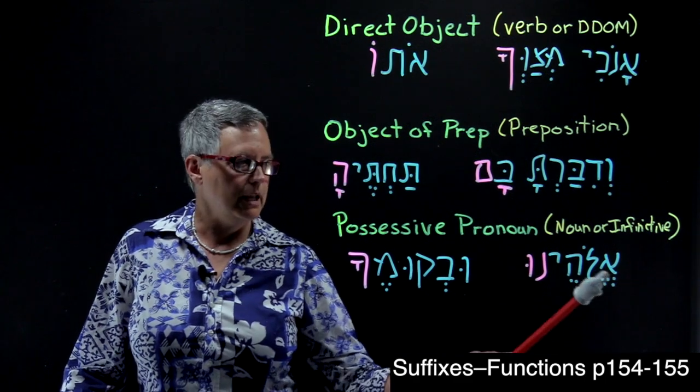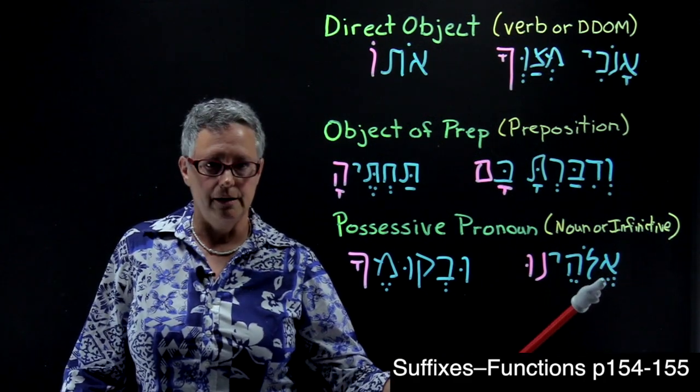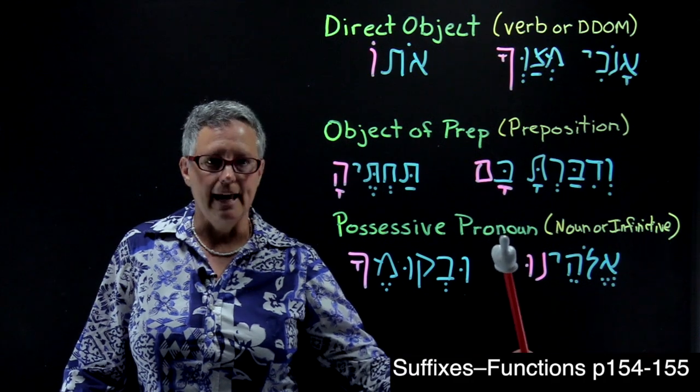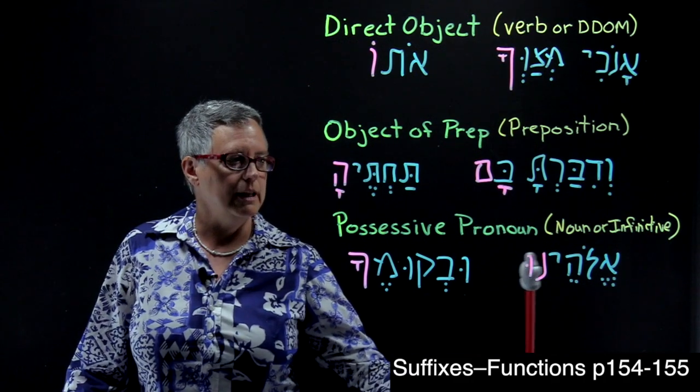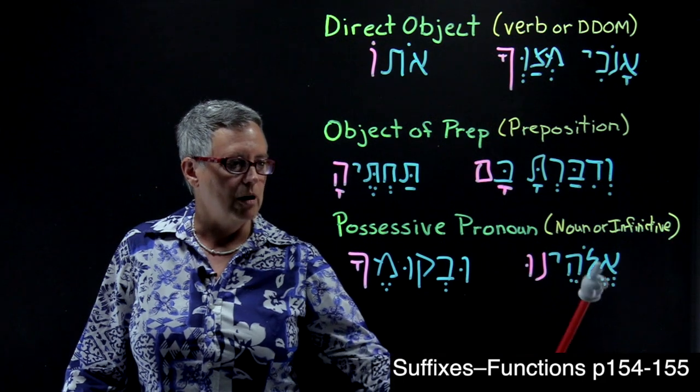eloheinu is our God. So now it is acting as a possessive pronoun in the sentence, our God.